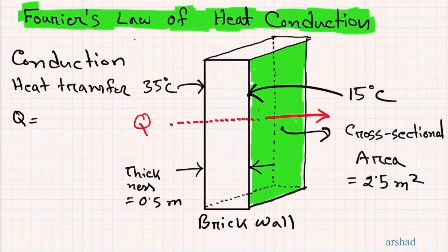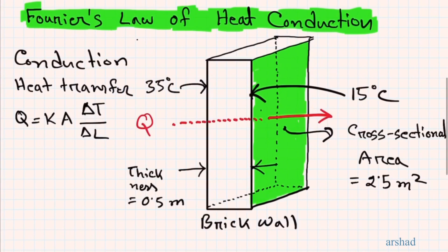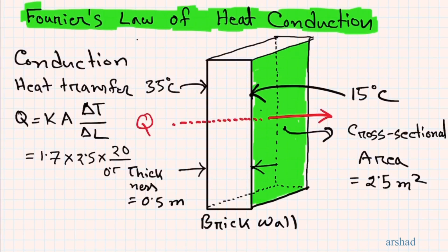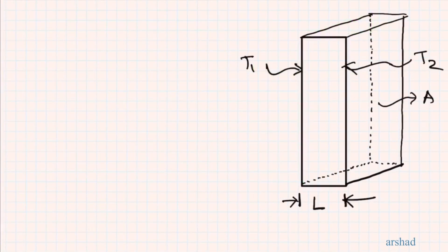Conduction heat transfer from Fourier's law is given by Q = K·A·ΔT / ΔL. We can put in all the values for K, A, ΔT, and ΔL and calculate to find that the amount of heat transferred in the direction marked by red is 170 watts.